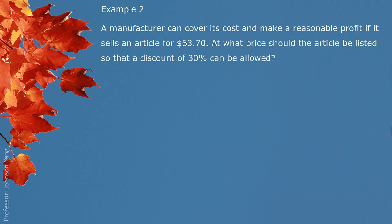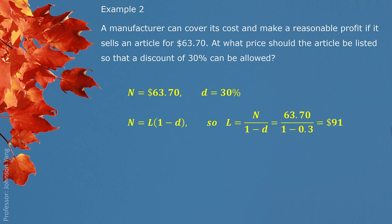Example 2. A manufacturer can cover its cost and make a reasonable profit if it sells an article for $63.70. At what price should the article be listed so that a discount of 30% can be allowed? Reading this question, $63.70 is the price being sold, so that is the net price, and we also have the rate of discount of 30%. We can find list price using the expression: net price divided by the net price factor (1 minus d), which gives us $91 as the list price.